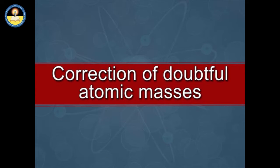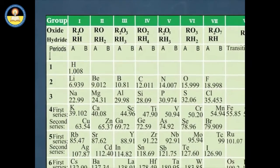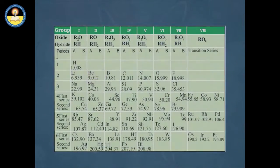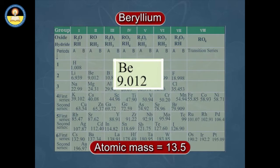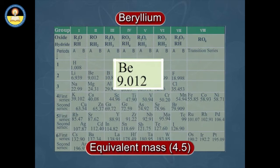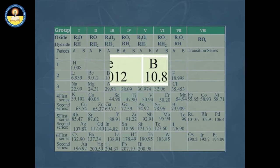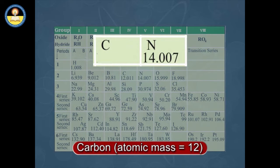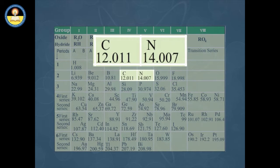Mendeleev's periodic table helped in correcting the doubtful atomic masses of some elements. For example, beryllium was assigned an atomic mass of 13.5 on the basis of its equivalent mass 4.5 and valency, which was wrongly calculated as 3. If beryllium has an atomic mass of 13.5, it should have been placed between carbon having atomic mass 12 and nitrogen having atomic mass 14. But no vacant place was available between carbon and nitrogen.